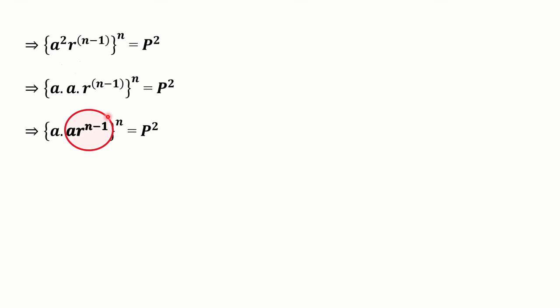Notice that a × r^(n-1) is the formula for the nth term aₙ, which we defined as b. So a² × r^(n-1) = a × (a × r^(n-1)) = a × b. Therefore P² = (ab)^n, which is exactly what we needed to prove.